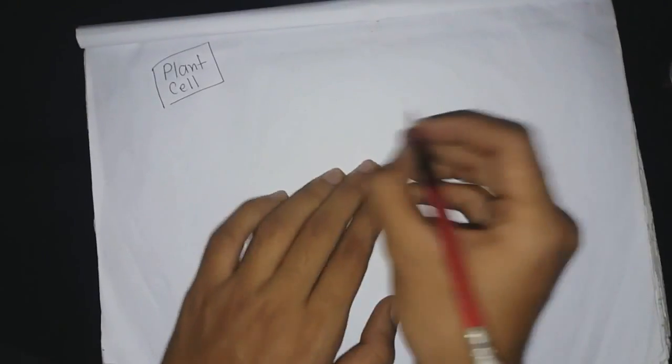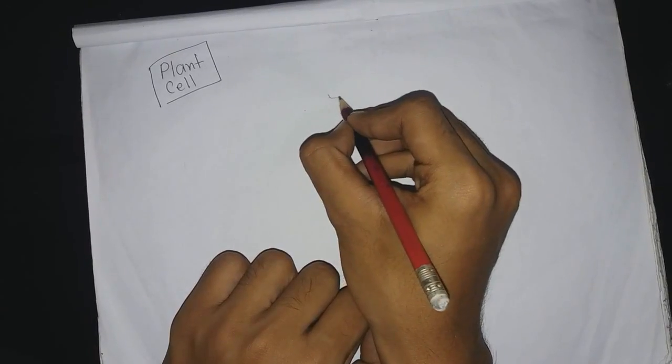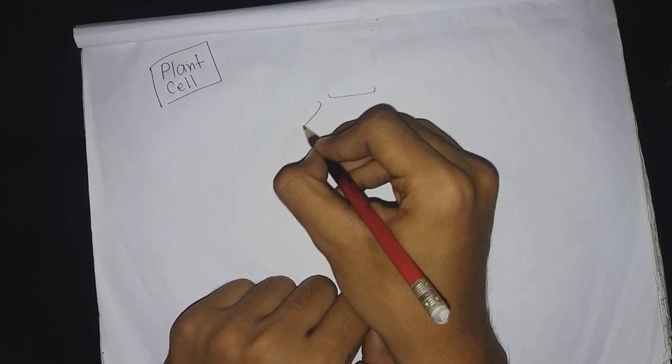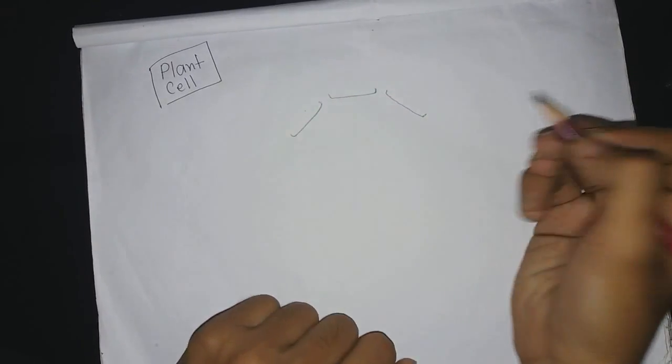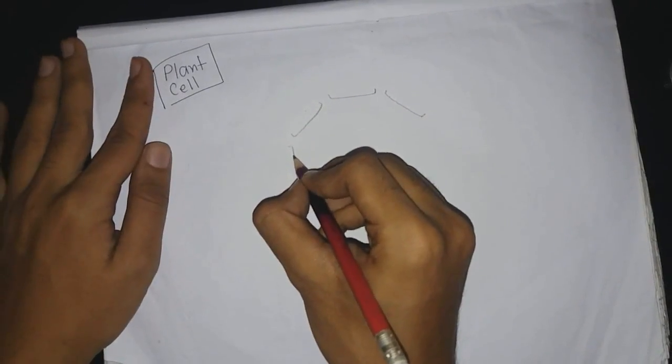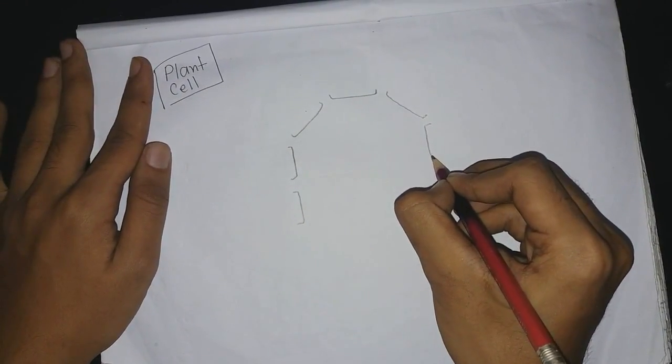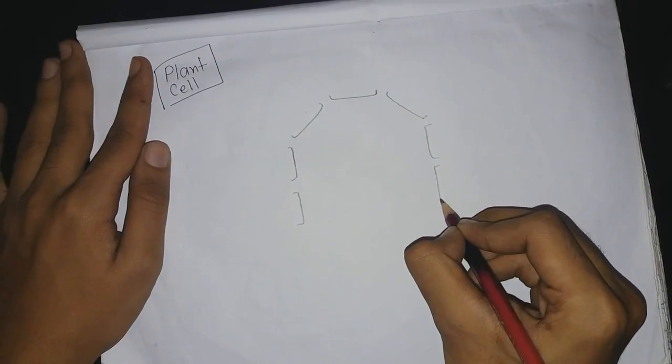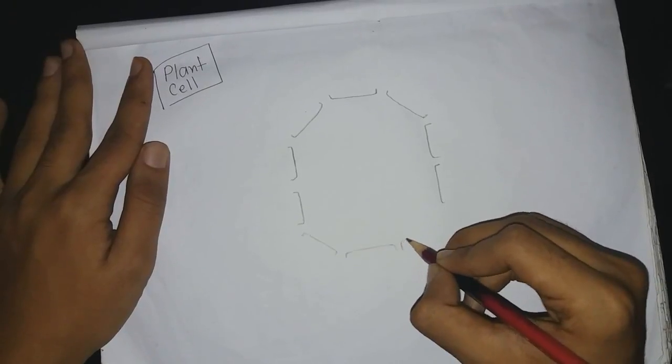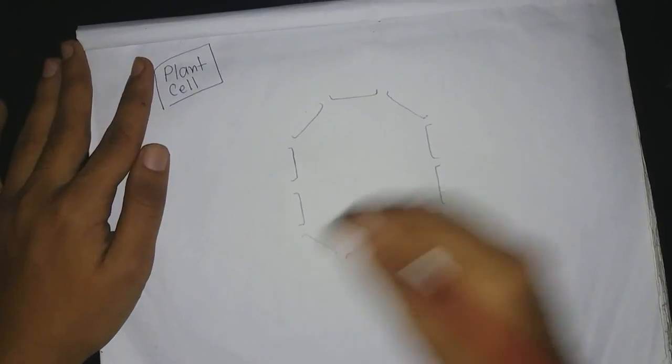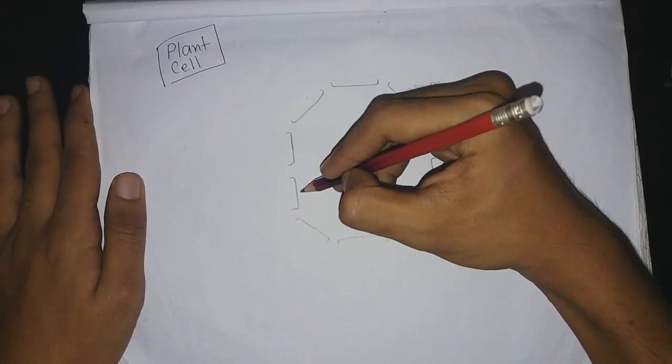At first, let me draw the cell wall. So cell wall is like this: give three parts of the cell wall up, and then two in the left, two in the right, then you can give two and three in the bottom. This is the cell wall.